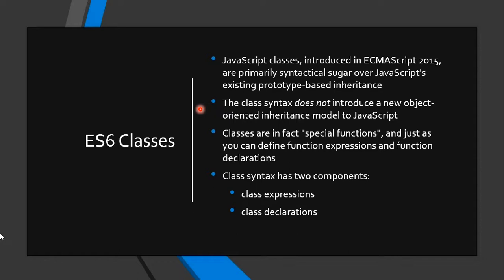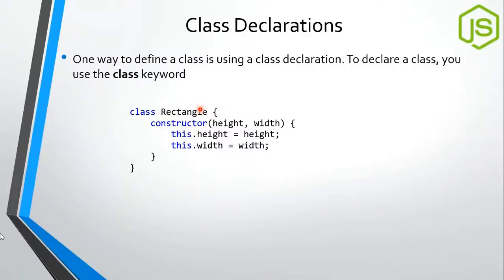One way to define a class is using a class declaration. To declare a class you use the class keyword, just like in other modern programming languages. This syntax helps us easily transfer from languages like Java to JavaScript ES6 classes. We use the class keyword, define the class name, and create a constructor using the constructor keyword — a reserved word — which is a constructor function that takes arguments and initializes the class fields.